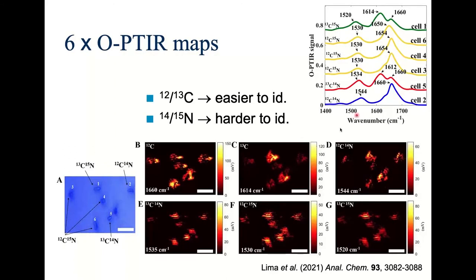Looking at six chemical maps: the map at 1660 cm⁻¹ (amide I) and at 1614 cm⁻¹ (where amide I shifts upon ¹³C labeling) can clearly reveal individual ¹³C-labeled bacteria, confirmed by full spectra. These are just single-frequency slices of the full spectrum. Trying to identify ¹⁴N versus ¹⁵N is harder because the signal is dominated by carbon — most biological material is carbon-based rather than nitrogen-based. The amide II vibration involves both CN and NH vibrations, giving four possible combinations of ¹²/¹³C and ¹⁴/¹⁵N, which is why seeing ¹³C is easy but seeing ¹⁵N is more difficult.